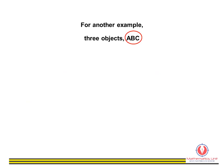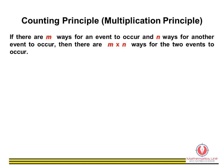For another example, if we have three different objects, we will have six different permutations. The counting principle, also known as the multiplication principle, is used to calculate the total number of ways possible events can happen.